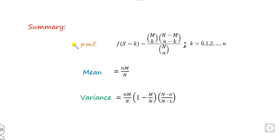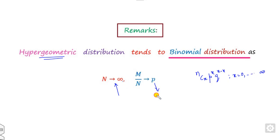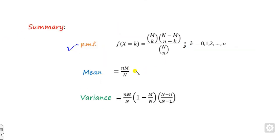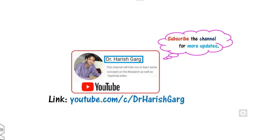In summary: given the PMF of the hypergeometric distribution, the mean is nM/N and the variance is as derived. The most important remark is that the hypergeometric distribution tends to the binomial distribution when the population size N approaches infinity and M/N equals p — the constant probability. In that limit, the mean becomes np and the variance becomes np(1 minus p), which are exactly the mean and variance of the binomial distribution. This is the way you can derive the mean and variance of the hypergeometric distribution. For more updated videos you can follow this link — best of luck, students.